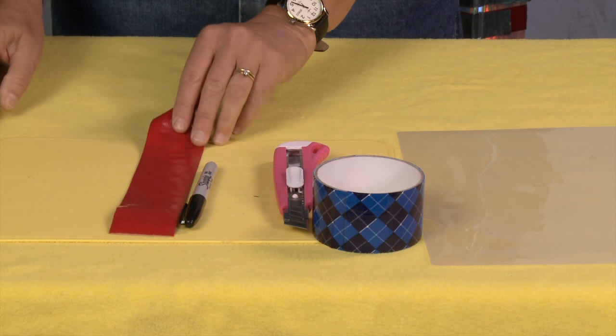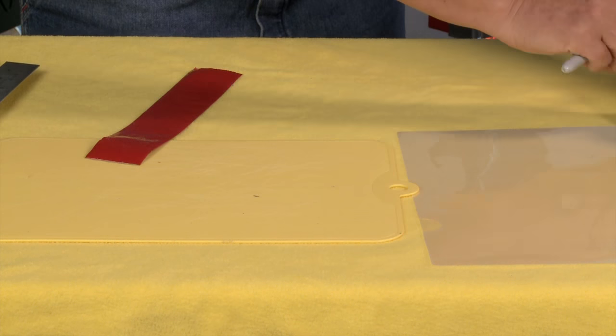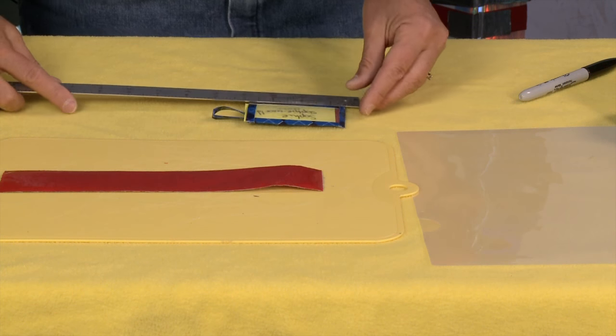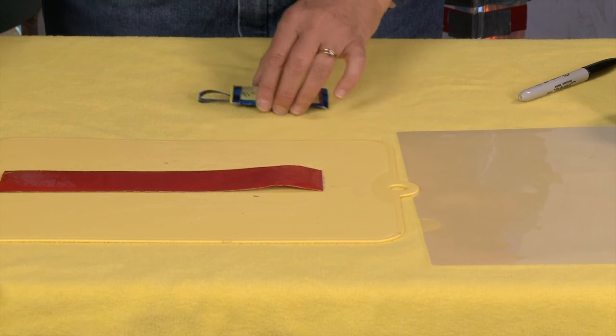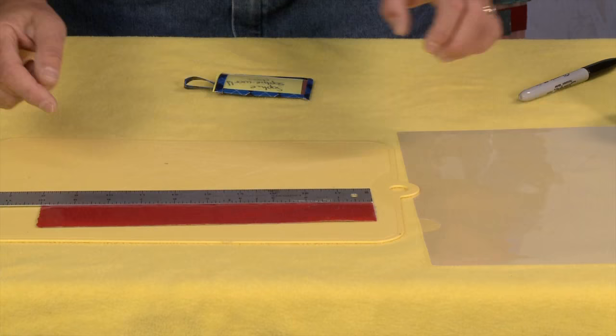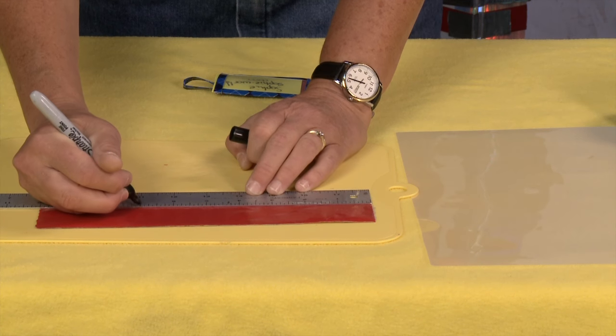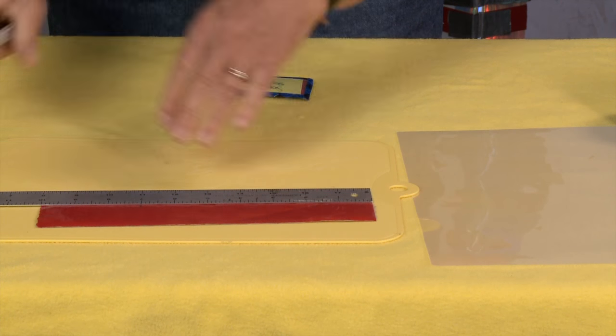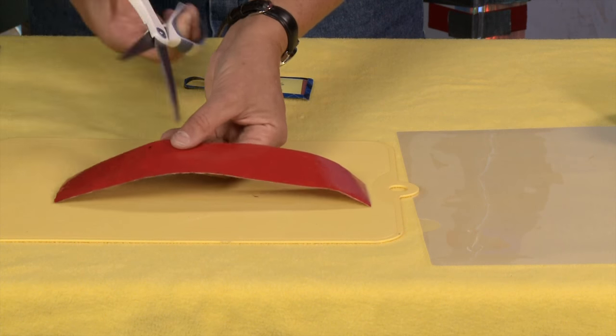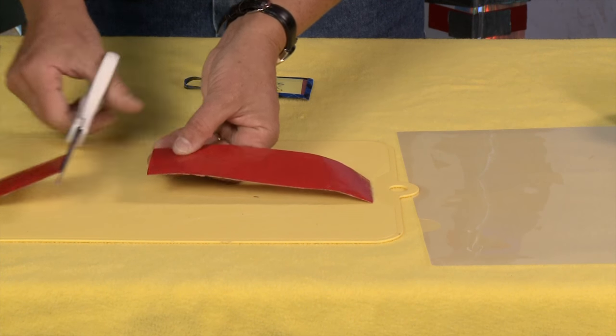So to start the first thing I'm going to do is measure a little piece of this that is 7 inches. So I'm going to measure this right here and I'm just going to put a little mark there and cut it right there like that.